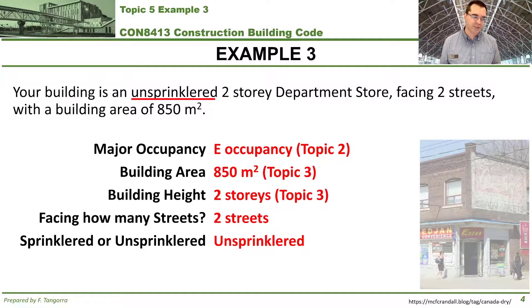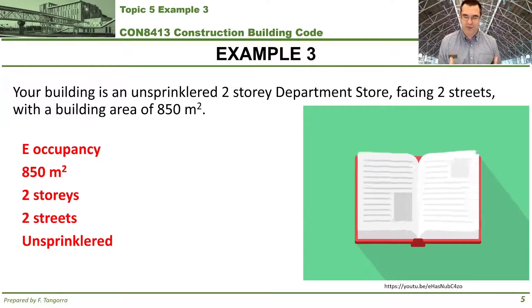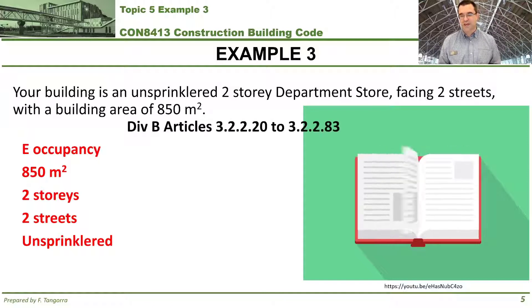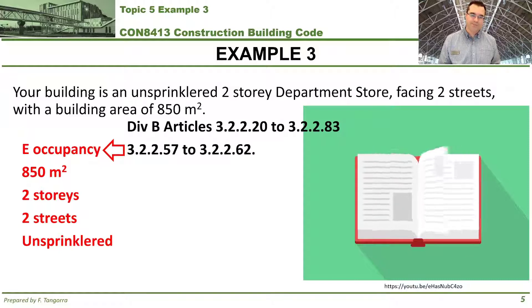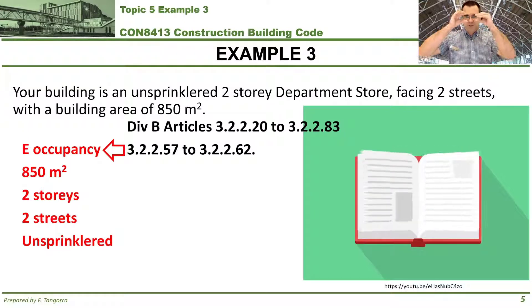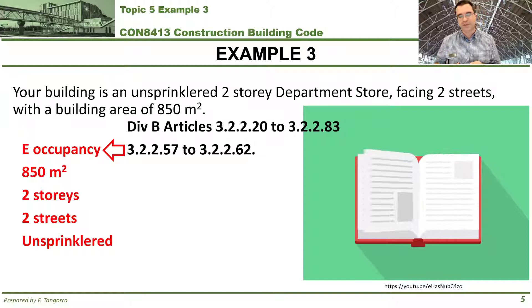Now that we have this information, I'm going to summarize the five building characteristics. But first, we have to identify which of the 63 articles actually apply, because we have anywhere from Article 3.2.2.20 to Article 3.2.283. That's a lot of articles. Where do we start? That's where our occupancy comes into play.